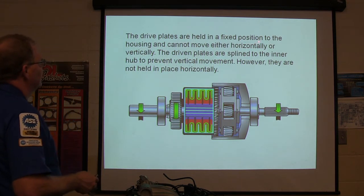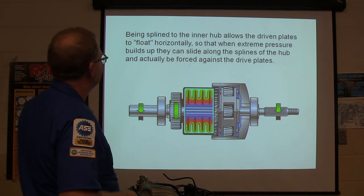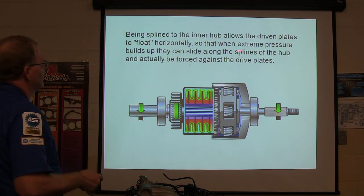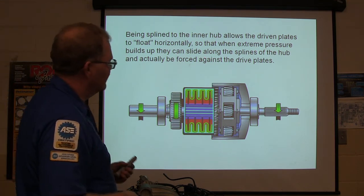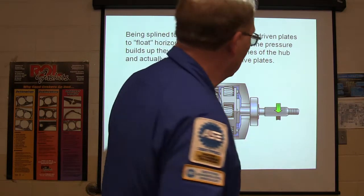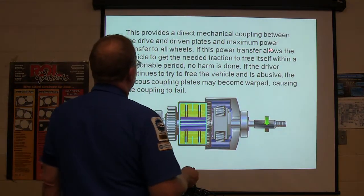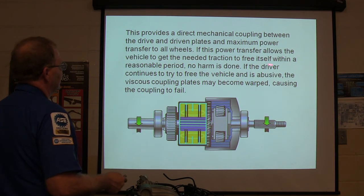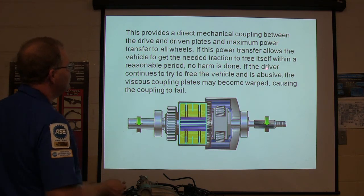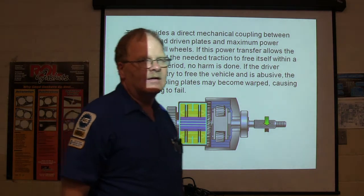The drive plates are held in a fixed position to the housing — they can't move horizontally or vertically. The driven plates are splined to the inner hub, which lets them float horizontally. When extreme pressure builds up, they can slide and be forced against the drive plates. There are various designs, but you get the point — it lets it slip. Direct mechanical coupling provides maximum power to all wheels, allowing the vehicle to get the traction it needs and free itself without harm.